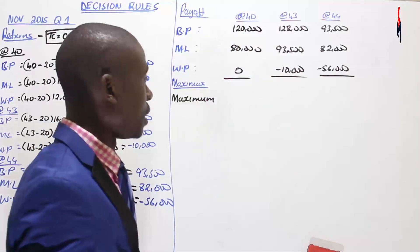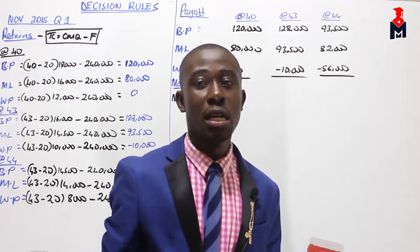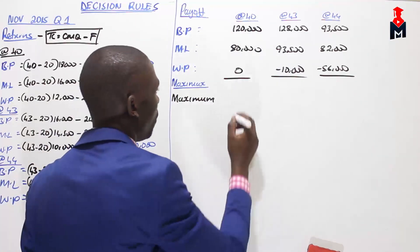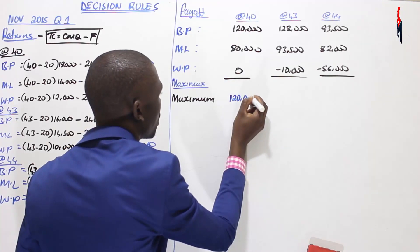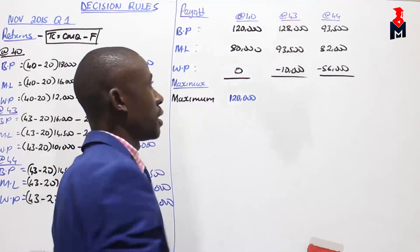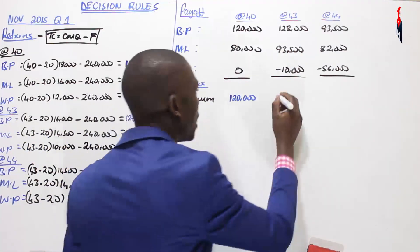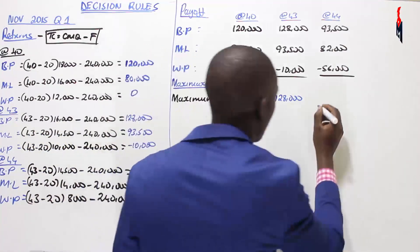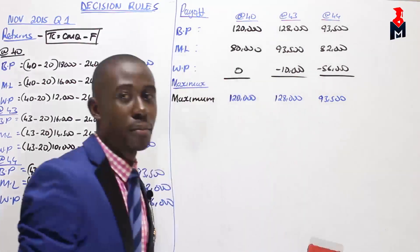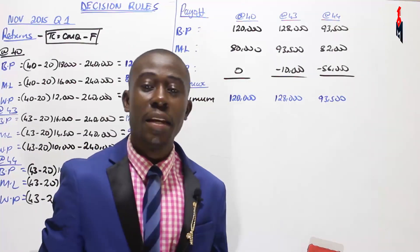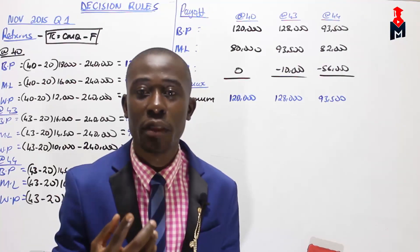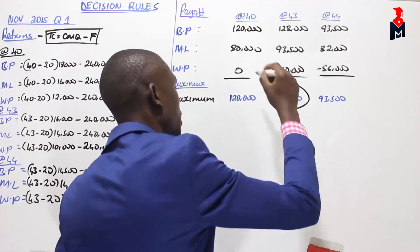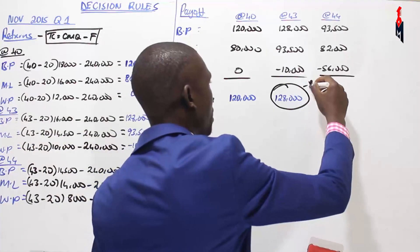We identify our maximum based on our decision alternatives — in this case, the decision alternatives are the selling prices. At a selling price of 40, the maximum is 120,000. At 43, the maximum is 128,000. At 44, the maximum is 93,500. After we've identified our maximums, the next step is to select the best of the maximum, which is 128,000. This is the best of maximum.